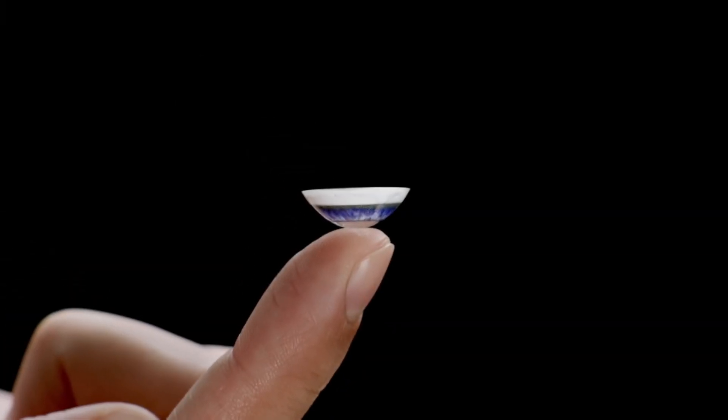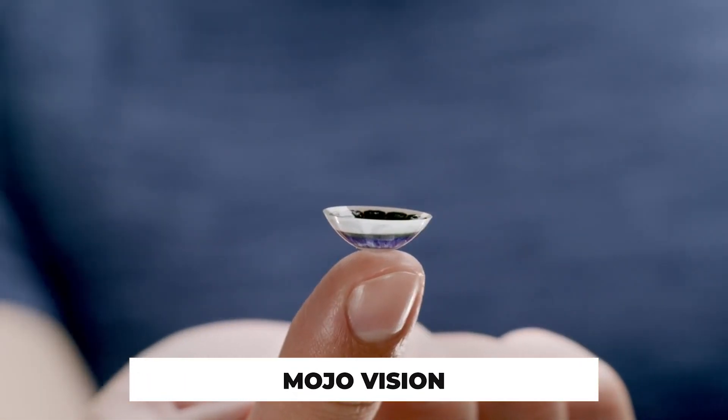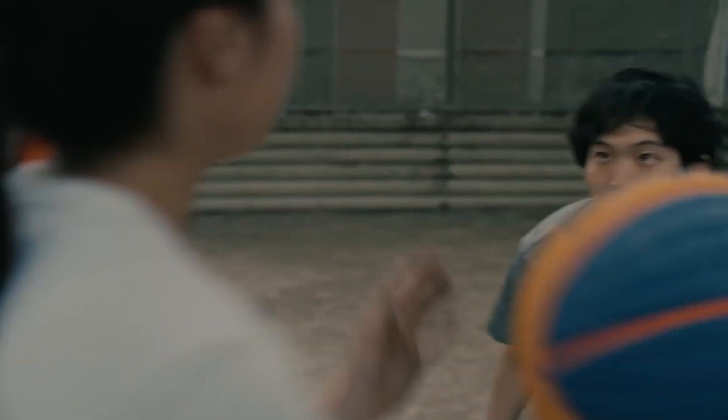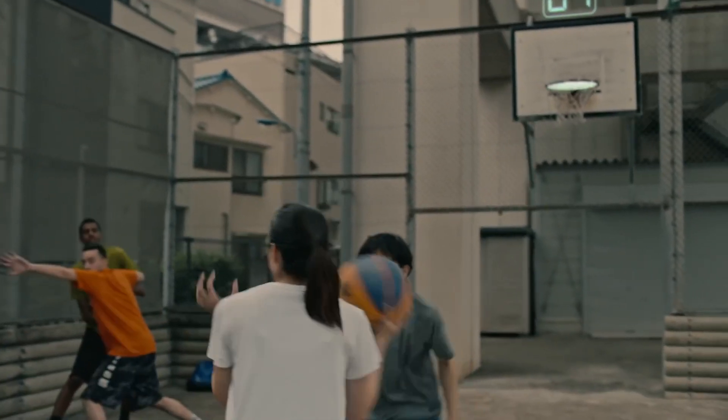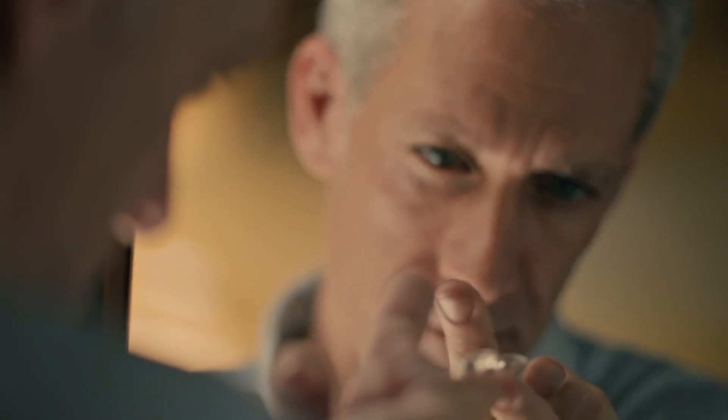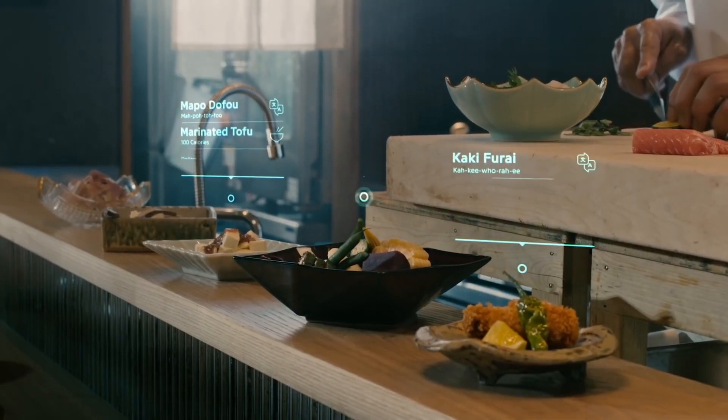After that, the latest augmented reality contact lens prototype from MojoVision has been revealed. MojoVision has announced the creation of a new prototype of their augmented reality contact lenses, the Mojo Lens. The business thinks that its smart contact lens will bring invisible computing to life. The Mojo Lens prototype is an invention positioned at the crossroads of smartphones, augmented reality, virtual reality, smart wearables, and health tech, and is a crucial milestone for the firm in its development, testing, and validation process.